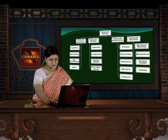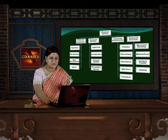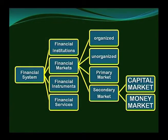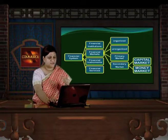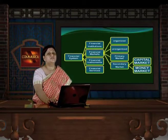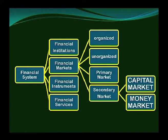This is the overall scenario of the financial system. Under financial markets, in the organized sector there can be bankers and RBI; in the unorganized sector, local money lenders. Under primary market there is first-time issue of securities. Under secondary market there are two aspects: capital market and money market. Capital market deals with long-term investments and securities, while money market is where short-term fund needs are met.